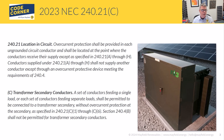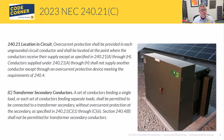One big thing to point out is the last sentence in 240.21C: 240.4B shall not be permitted for transformer secondary conductors. 240.4B is the allowance that lets us protect conductors with an overcurrent device rated higher than the conductor's ampacity — a common application in sizing conductors. What this tells us is we can't apply that here. So if you install an overcurrent device, the conductors must have an ampacity of at least what that overcurrent device is rated. We can't round up to the next size as allowed in 240.4B.